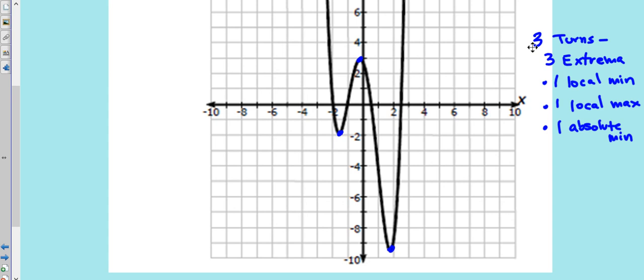Additionally, you can always have at least one more zero than you have turns. So when I look at this, right now I have four real zeros. You count that up, or four real roots. Those four. Four real roots.